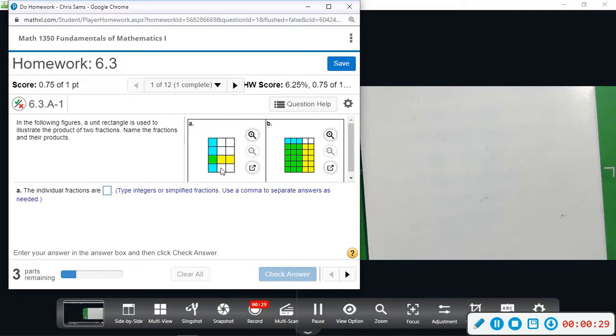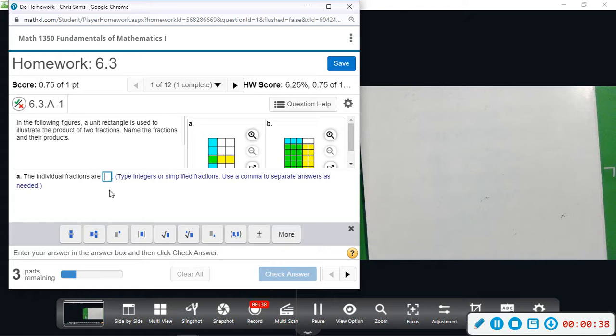So this unit rectangle is divided into three columns and four rows. One of those columns is highlighted, one of three. So one of the fractions is one over three.